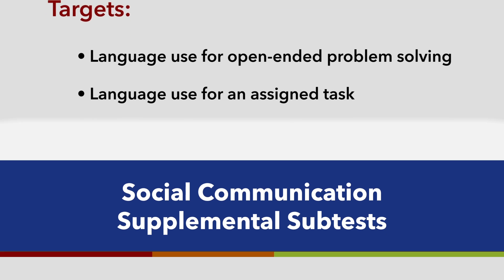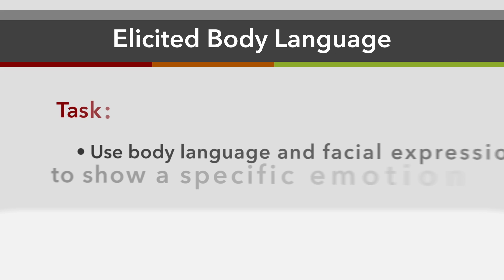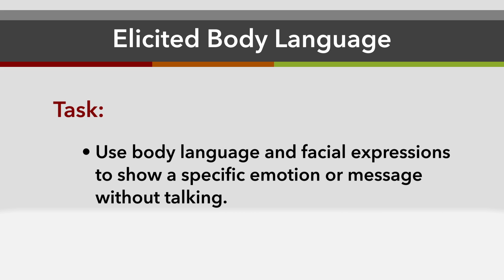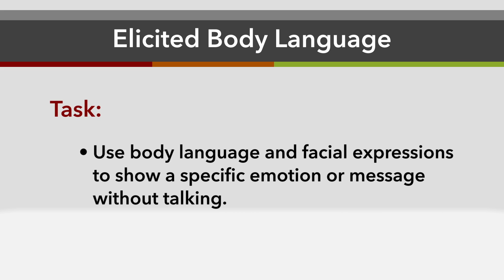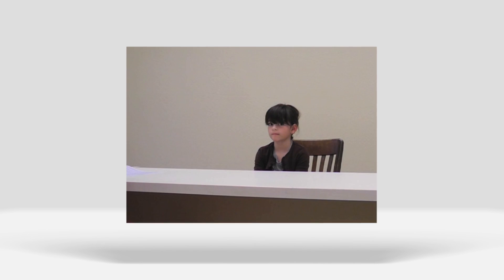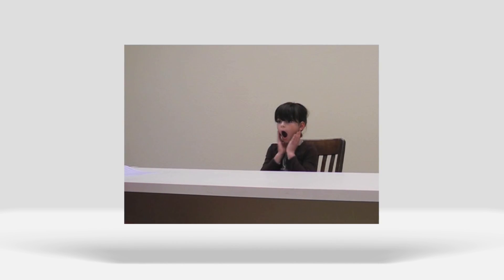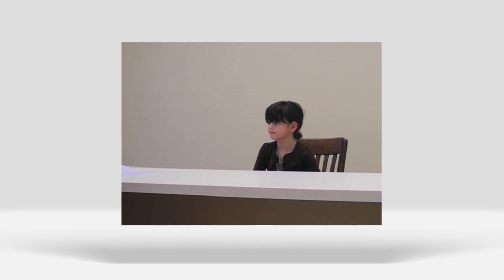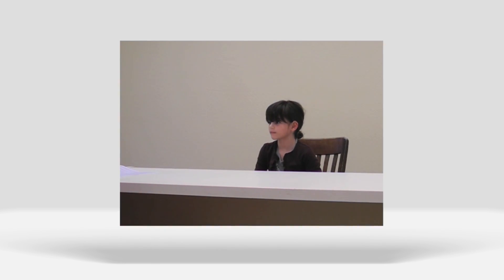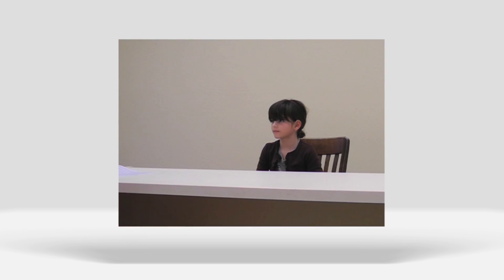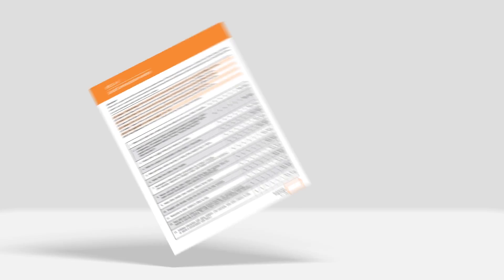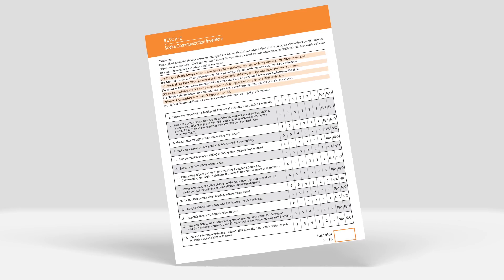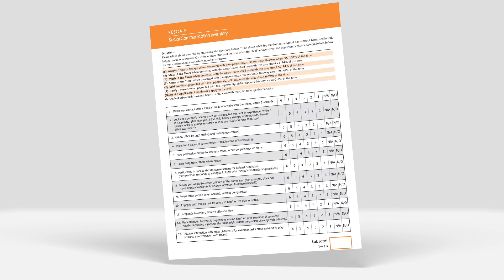The social communication supplemental subtests include elicited body language. Pretend you are surprised. Pretend your team just won a very important game, and you are very excited. The social communication inventory provides a way to rate and track social behaviors in other settings.